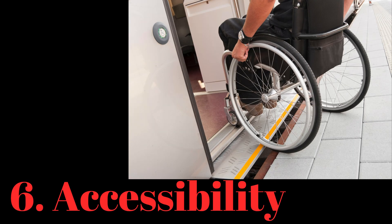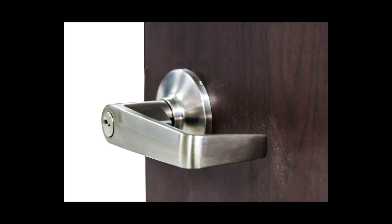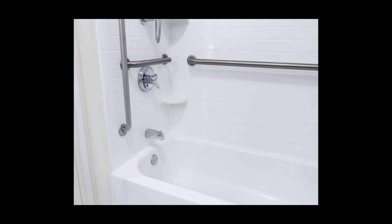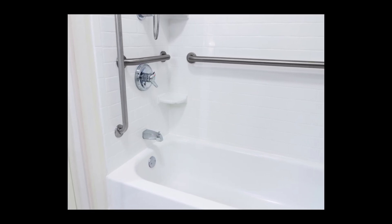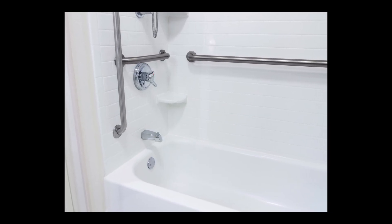Number six is Accessibility. Design the home to be accessible to people of all ages and abilities. Incorporate features such as step-free entrances, wide doorways and hallways, lever-style door handles, and accessible bathroom and kitchen layouts to accommodate mobility-impaired individuals.